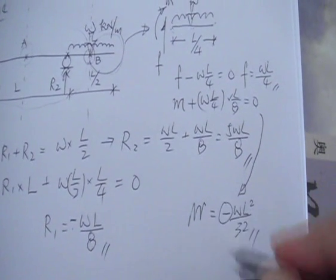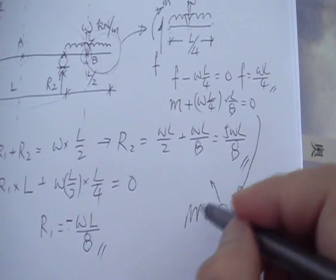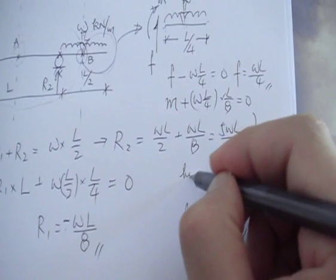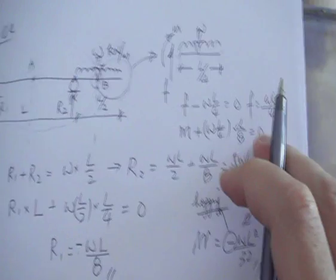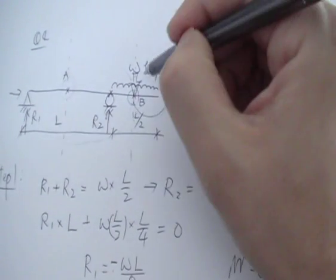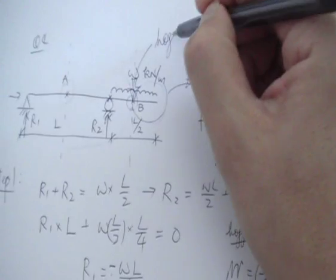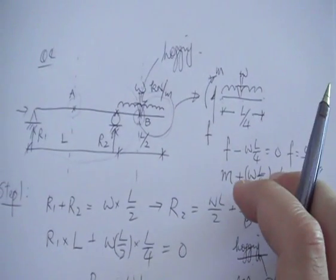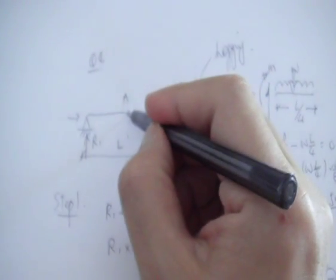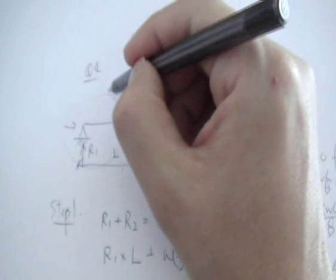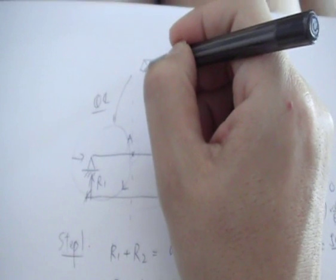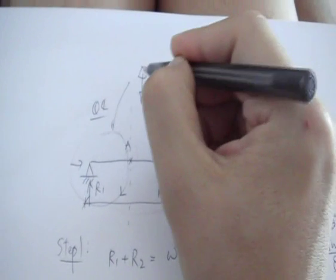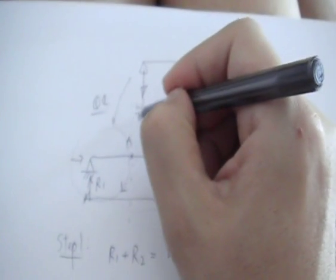So M is simply negative WL squared over 32. What does negative mean? According to our sign convention, negative means hogging. So the bending moment at this particular point is actually hogging. To find the bending moment at the other point, draw the free body diagram with R1 going down — that's WL over 8 — and nothing else on that segment. Point A is at distance L over 2.